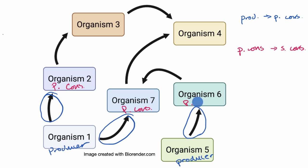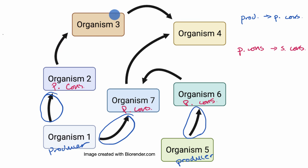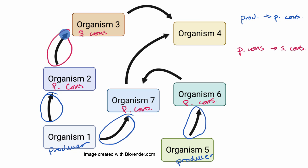Secondary consumers are by definition things that aren't decomposers, but they're eating primary consumers. So they're going to have arrows coming in from primary consumers and out to either other secondary consumers or to decomposers. Organism three right over here is a secondary consumer, so this arrow is from a primary consumer to a secondary consumer.